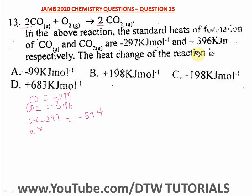Then two times -396 gives us -792 kJ/mol. Now, heat change - we know heat change is the heat of the product minus the heat of the reactant.